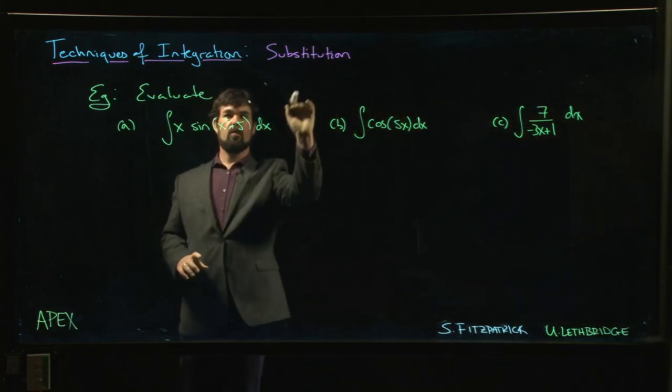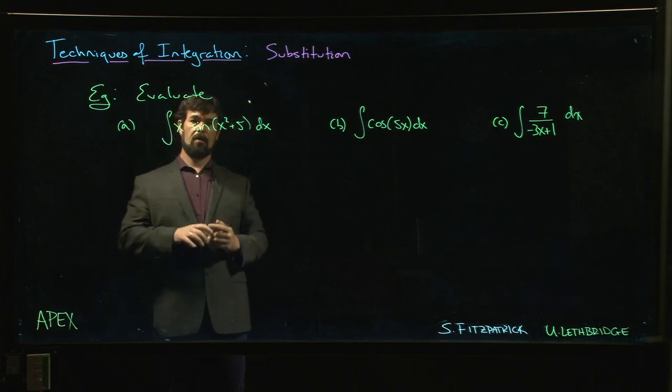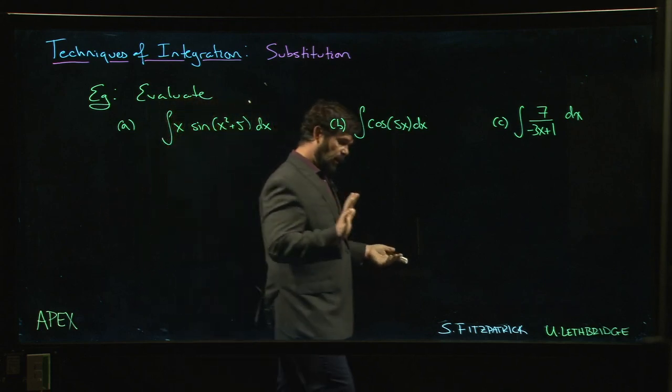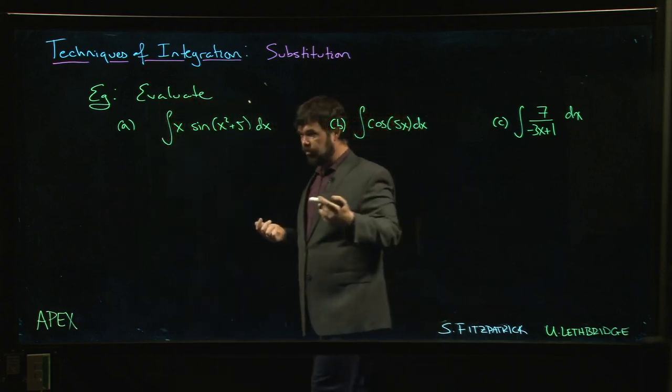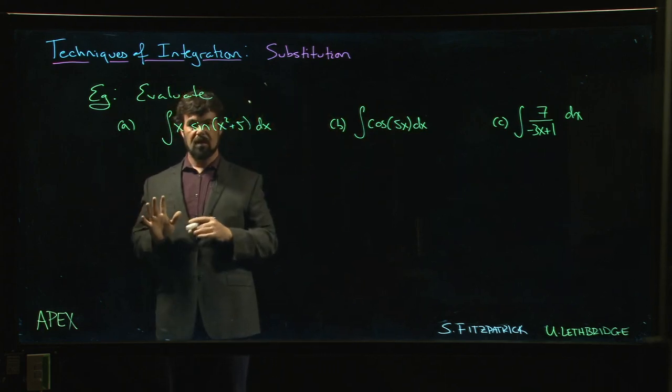All right, let's look at a few examples using substitution to find antiderivatives. This first one is pretty similar to the example we led off with. We had e to the x squared, now you have sine of x squared. You might worry about the plus five, but we know that taking the derivative of a constant gives you zero.